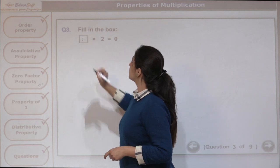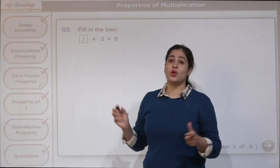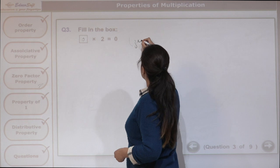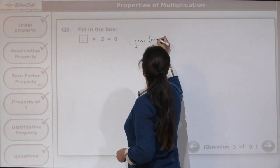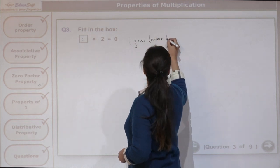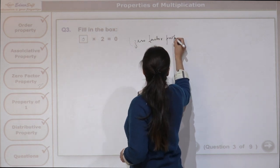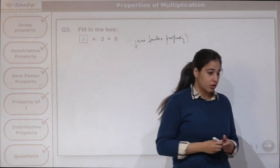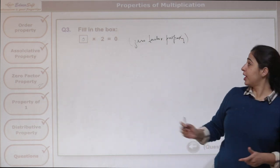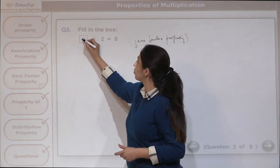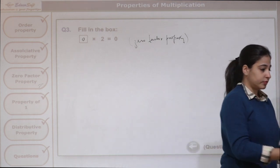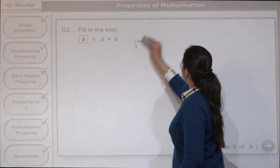0 times 2 is going to give us 0. Here we have used the zero factor property. The answer is 0. Let us move ahead.